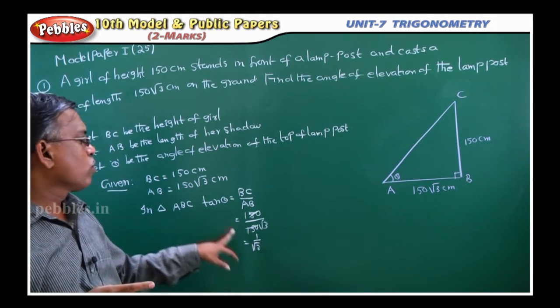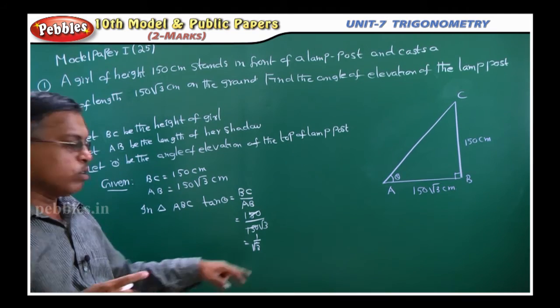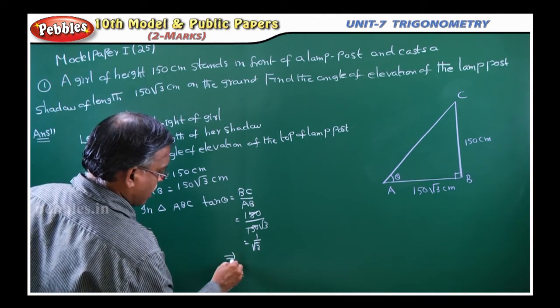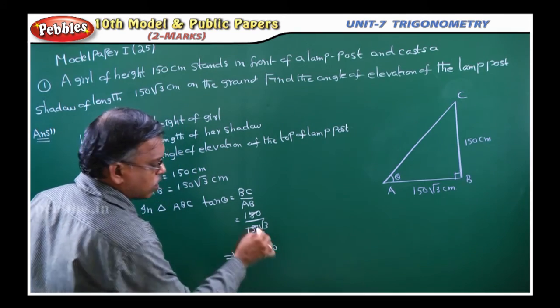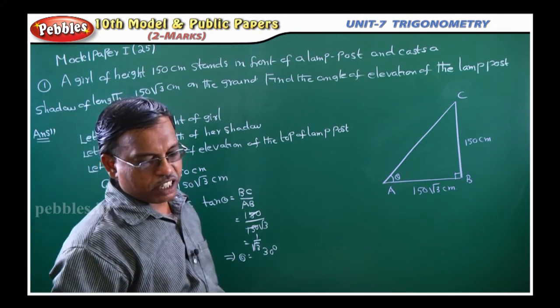So in that, for tan 30, it is 1 by root 3. So this implies theta is equal to 30 degrees. So that means the angle of elevation is 30 degrees.